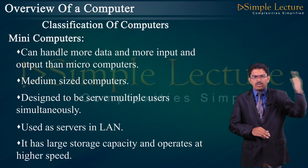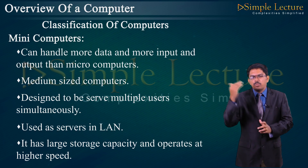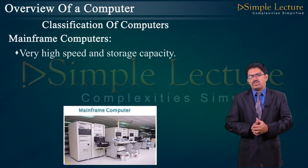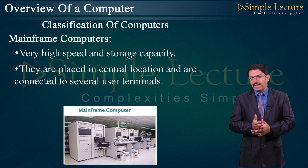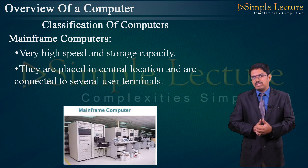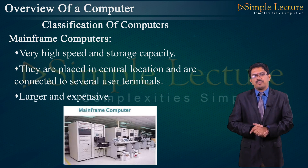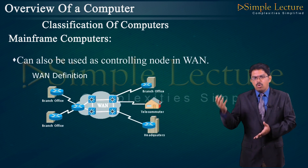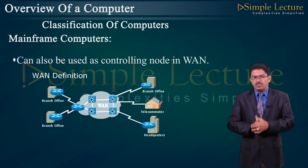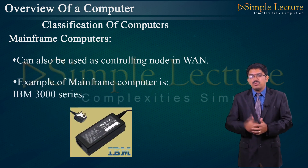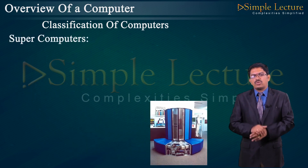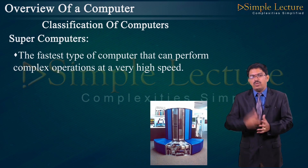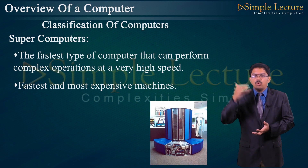Mainframe computers have very high speed and storage capacity. They are placed in a central location and can be connected to several other terminals. They are larger and more expensive, generally used in centralized databases, and can also be used in controlling nodes in a WAN (Wide Area Network). Example: IBM 3000 series. Supercomputers are the fastest and most expensive machines, capable of performing complex operations at very high speed.